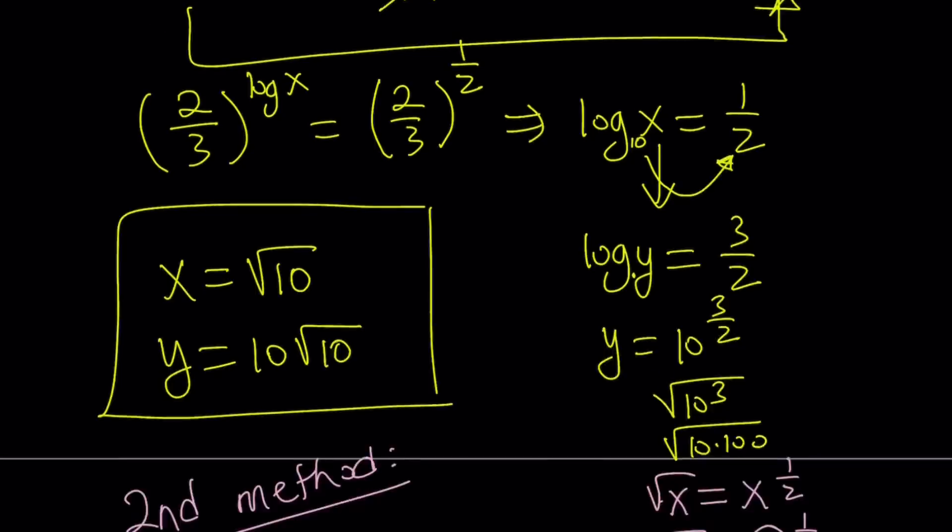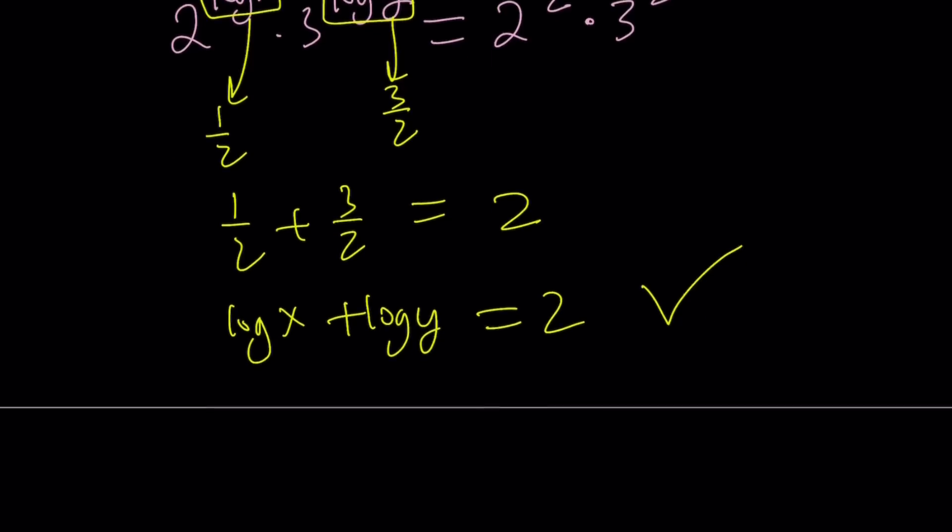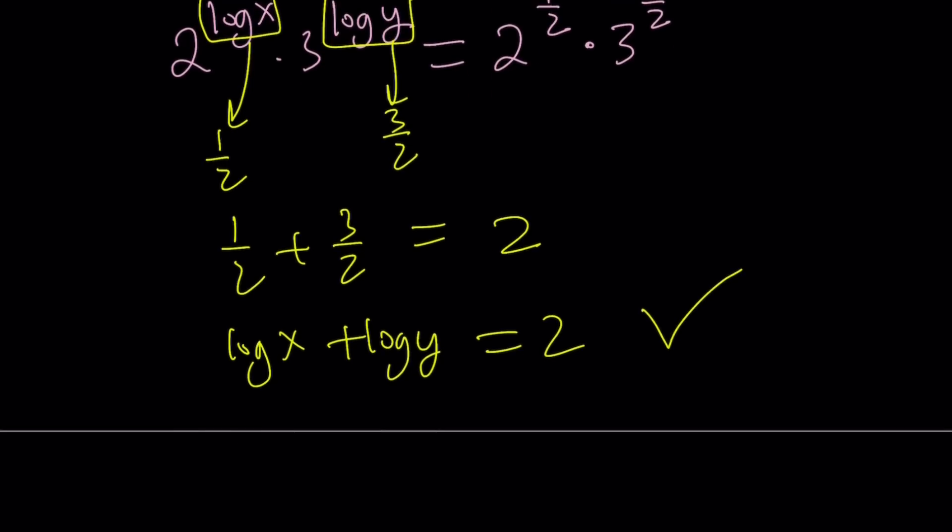So here's what it is: log x plus log y is equal to 2. And as you can see here, 1 half plus 3 halves is equal to 2. Therefore, the first equation of our system is also satisfied, which means this solution works, or this method works—not in general, but I should say in this case, since it satisfied both of the equations.